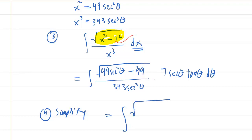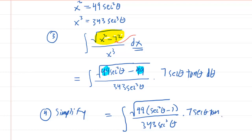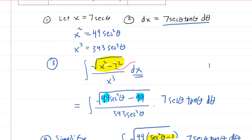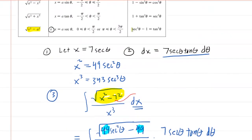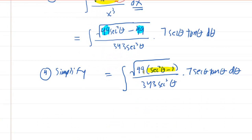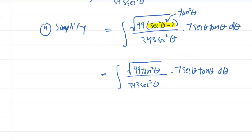Let's go underneath the square root and notice that we have a common factor of 49 there. We are going to factor out a 49, which leaves us with secant squared of theta minus 1, all over that same denominator, multiplied by the remaining quantity. Now take a look inside the parentheses: you have secant squared minus 1. From the trig table, secant squared of theta minus 1 equals tangent squared. So we substitute tangent squared for that quantity in the parentheses.